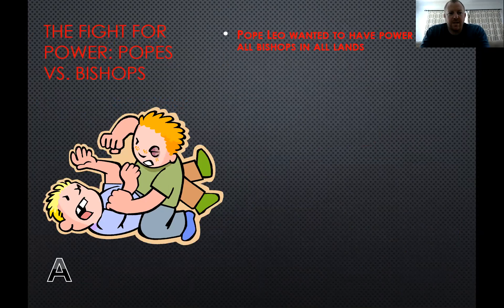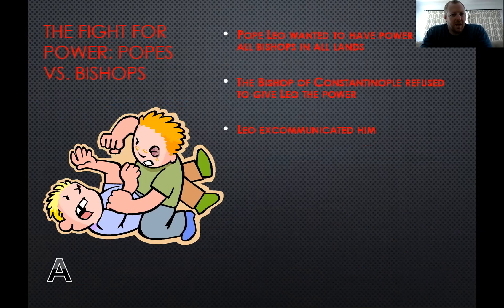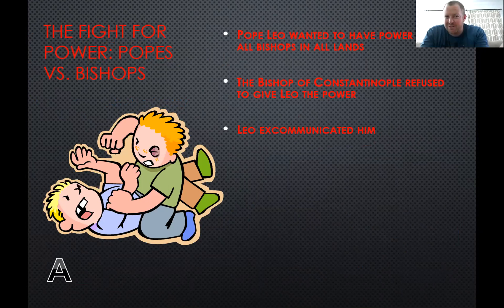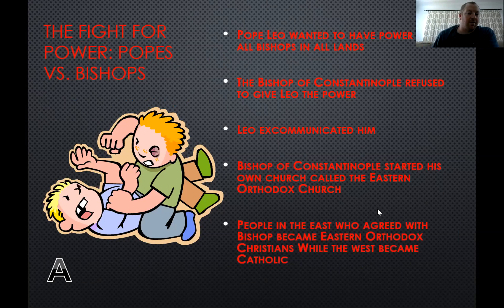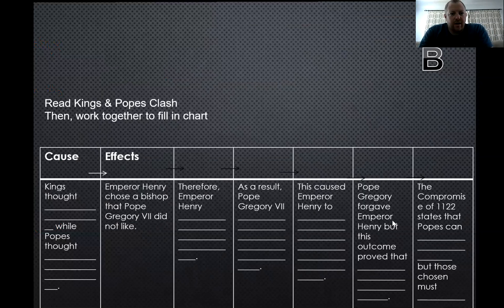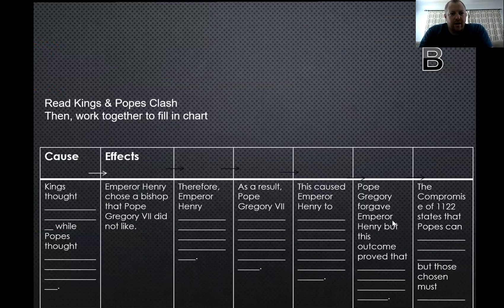So what did the fight for power look like? There's a Pope named Leo who wanted power over all of the bishops in the lands. Bishops are high-ranking members of the Catholic Church. The Bishop of Constantinople refused to give Leo power, so Leo excommunicated him — meaning sent him to hell if he has the power to do that. So the Bishop of Constantinople started his own church; they're called the Eastern Orthodox. People in the East who agreed with the bishop became Eastern Orthodox, while Christians in the West became known as Catholic.